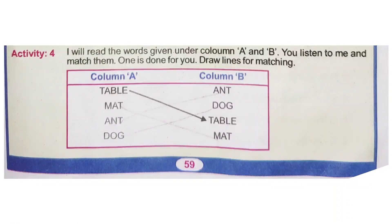Activity 4. I will read the words given under Column A and B. You listen to me and match them. One is done for you. Draw lines for matching.